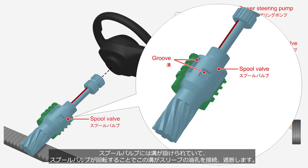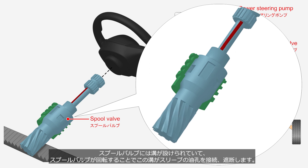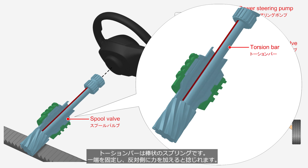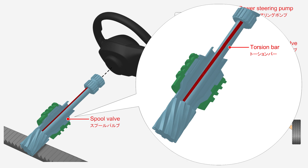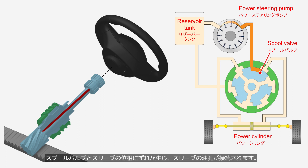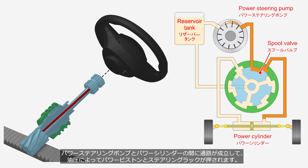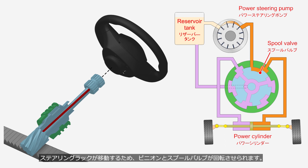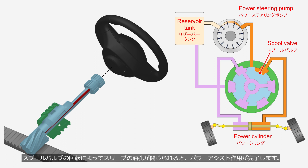The spool valve is equipped with grooves. As the spool valve rotates, these grooves open or close the inlet and outlet ports on the sleeve. A torsion bar passes through the interior of the spool valve — a rod-shaped spring that twists when rotational force is applied. When the driver operates the steering wheel, resistance from the tires causes only slight movement of the steering pinion and spool valve, leading to torsion in the torsion bar. A phase shift occurs between the spool valve and the sleeve, connecting the inlet and outlet ports. A fluid pathway is established between the power steering pump and the power cylinder, causing the power piston and steering rack to be pushed by hydraulic pressure. As the steering rack moves, the pinion and spool valve rotate, and when the ports of the sleeve are closed, the power assist action is completed.